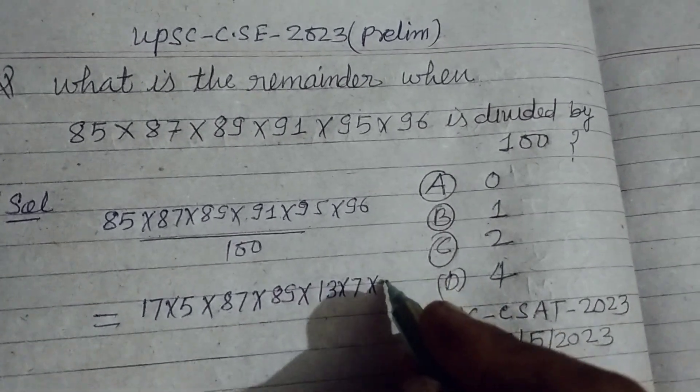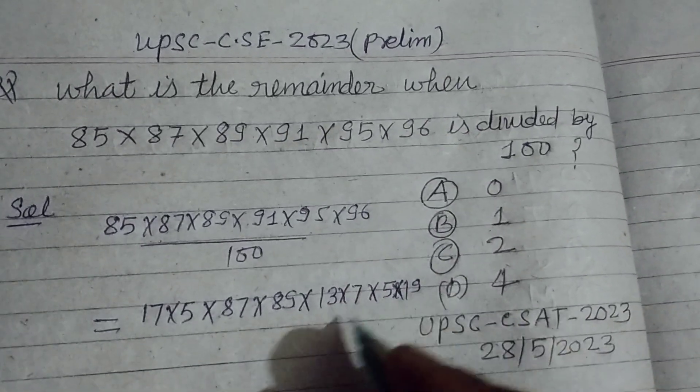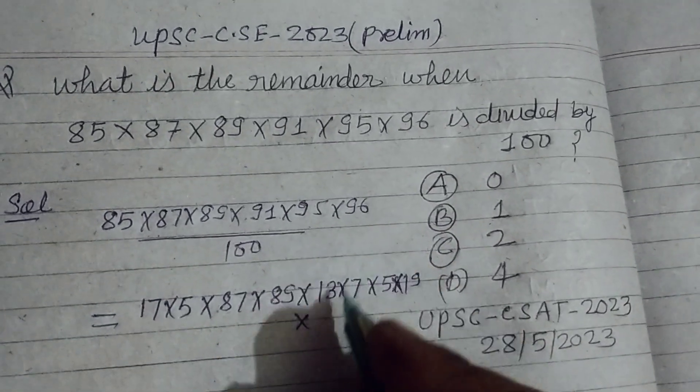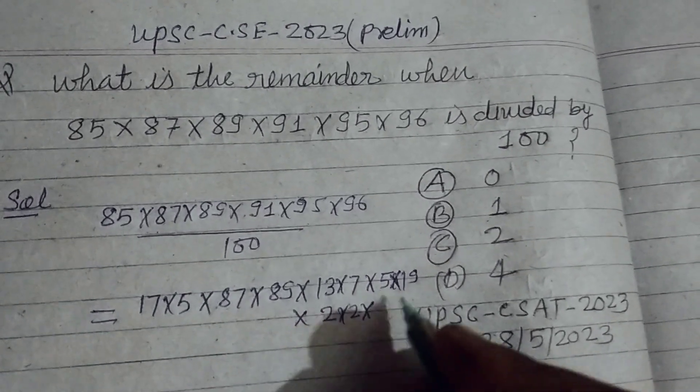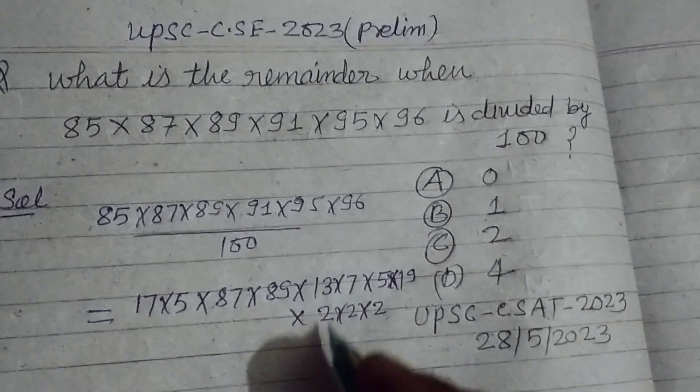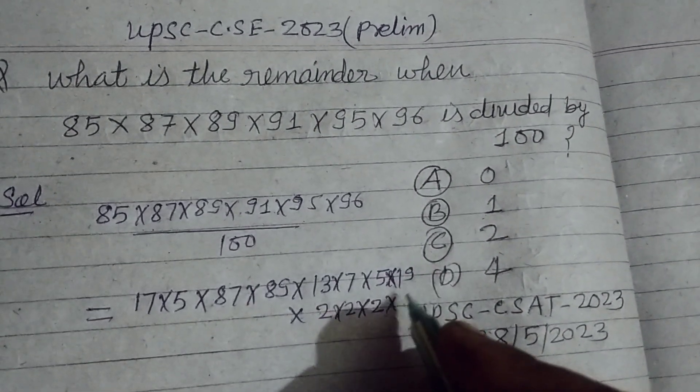95 can be written as 5×19. 96 can be written as 2×2×2, multiplied by 8, and 16, and 2×3×2.